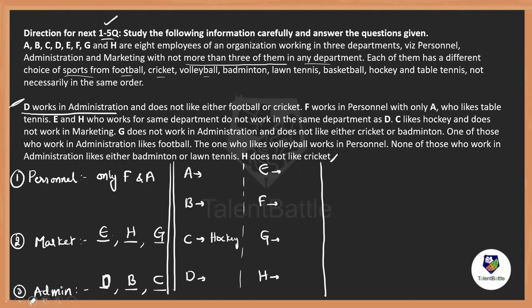From the clue about F working in Personal with only A, who likes table tennis — the comma means A is the one who likes table tennis. So A = table tennis. Next clue: the one who likes volleyball works in Personal. Personal has only F and A, and A already likes table tennis, so F must like volleyball. So F = volleyball.